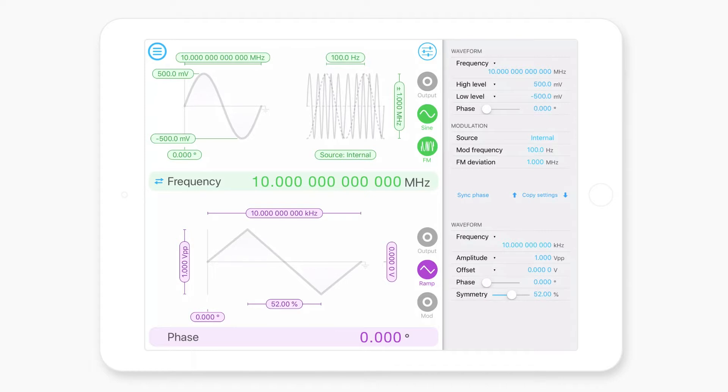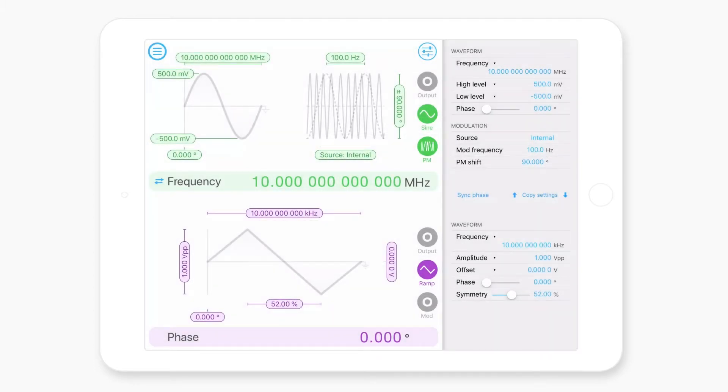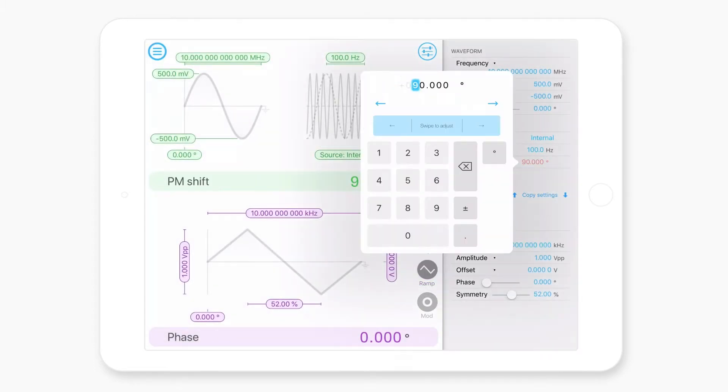So the thing to note here is that the FM deviation is the deviation from the center frequency. So in this case, we would expect the output to be modulated between nine megahertz and 11 megahertz. We also have phase modulation. This allows us to set the modulation depth in terms of phase.